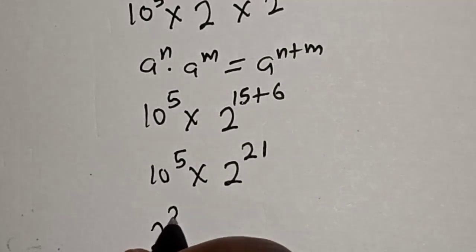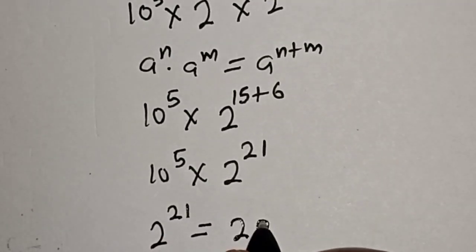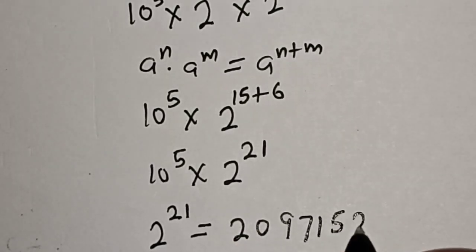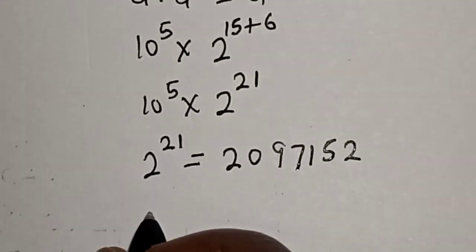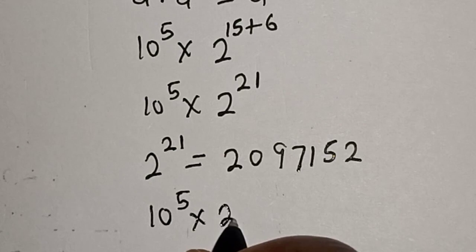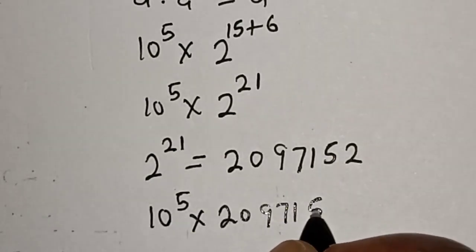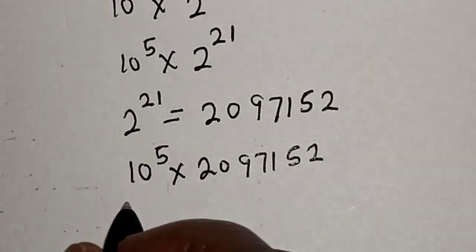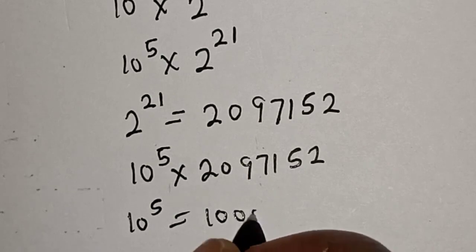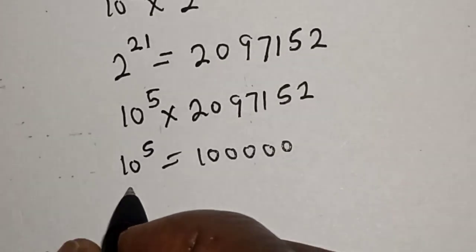2 raised to power 21 is equal to 2,097,152. Then we have 10 raised to power 5 multiplied by 2,097,152. And 10 raised to power 5 equals 100,000. Multiplying everything together we get our result.